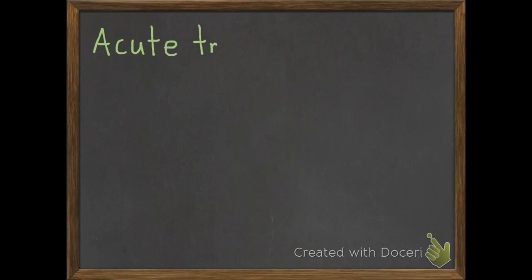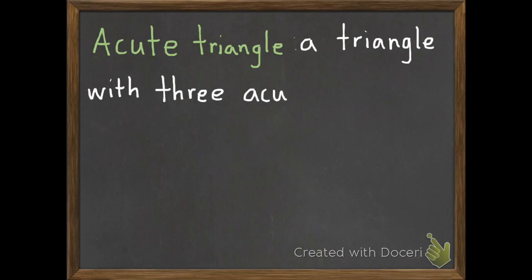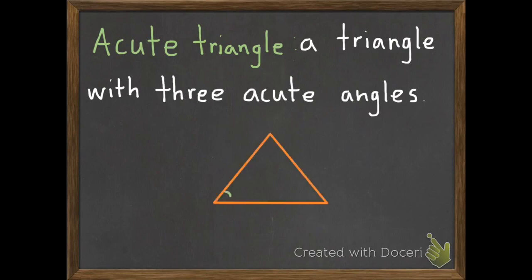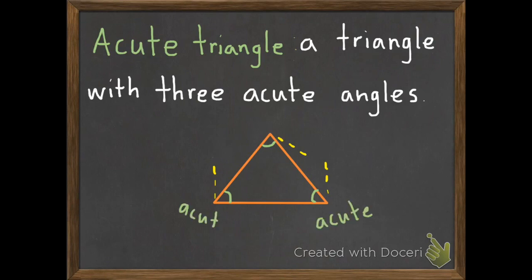Third, we have acute triangle. An acute triangle is a triangle with three acute angles. Here's our triangle — this angle is less than 90 degrees, this angle is less than 90 degrees, and this angle is less than 90 degrees. So we have three acute angles, making this an acute triangle.